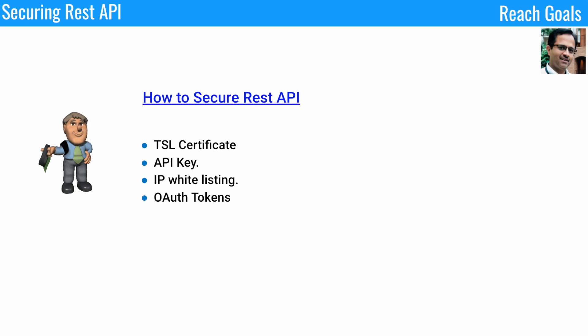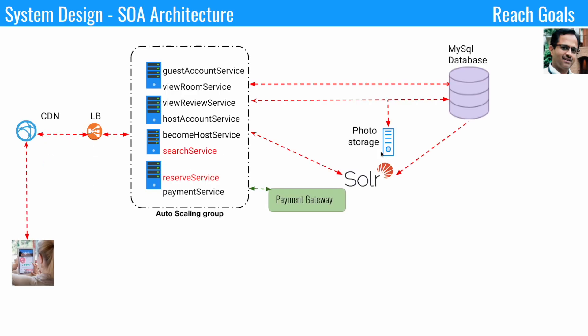Let's deep dive to see how OAuth 2 is used in protecting the REST API with an example. I'll explain OAuth 2 by using one of the previous system design videos in this channel — a system design of Airbnb. There is a presentation on this channel and links are in the description.